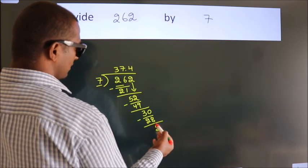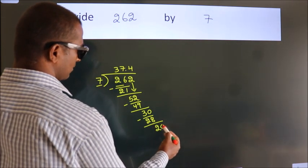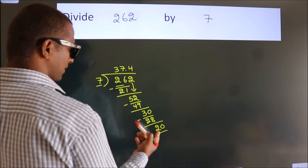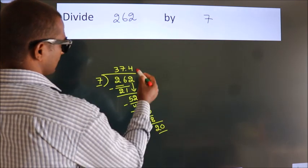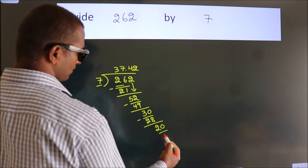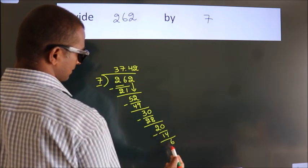After this, we already have the decimal. So, directly take 0. So, 20. A number close to 20 in 7 table is 7 twos 14. Now, we subtract. We get 6.